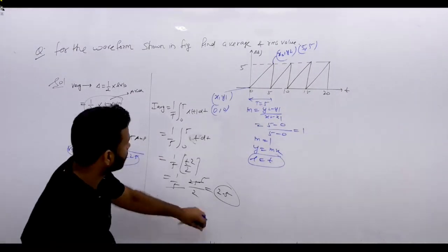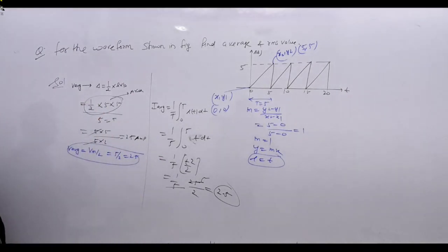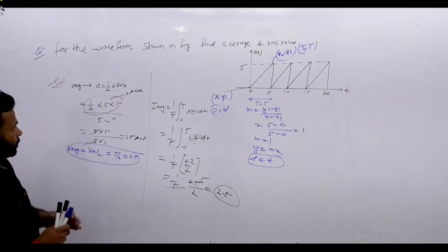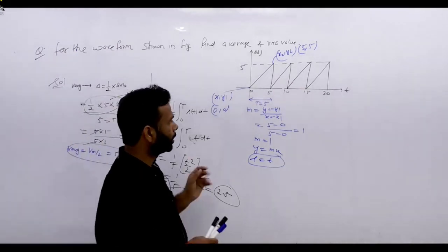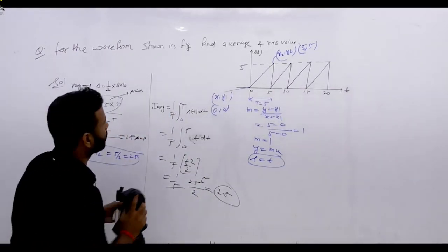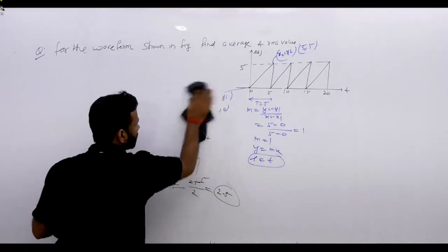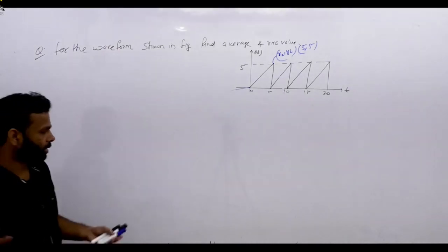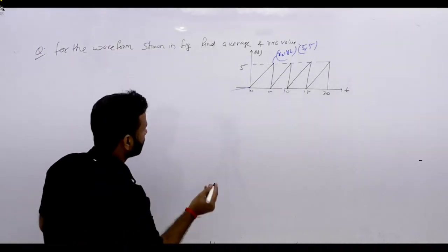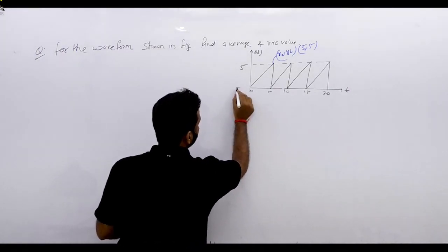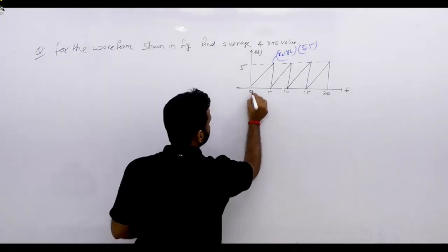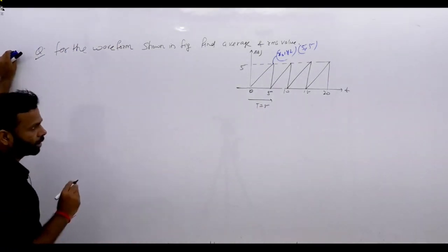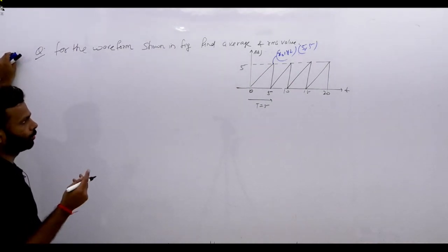We have covered the average value concept using three methods: area method, formula, and conventional approach. Now next part is the RMS value. The waveform has maximum value 5, time period 5. Using the formula for triangular waveform RMS: I_rms = Im/√3 = 5/√3.